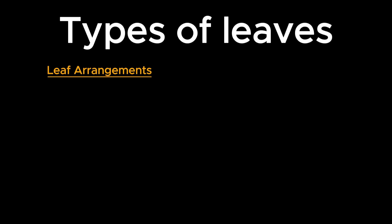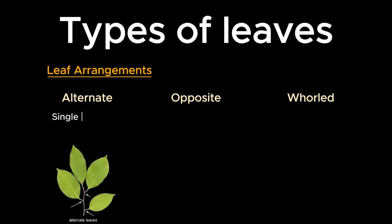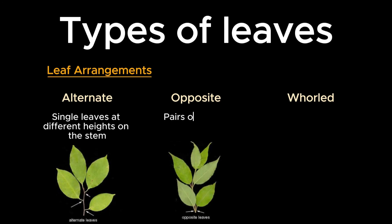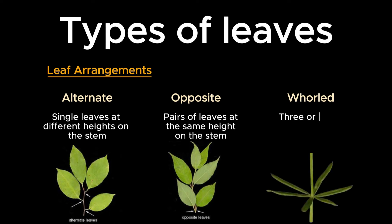Another point for leaf classification is their arrangement on the stem. Leaves are arranged in three ways on the stem: alternate, opposite, and whorled. In an alternate arrangement, single leaves appear at different heights on the stem, with only one leaf attached at each node. In the opposite arrangement, pairs of leaves appear at the same height on the stem, and both leaves are attached to the same node. In the whorled arrangement, three or more leaves appear at the same height on the stem.